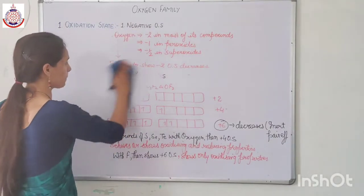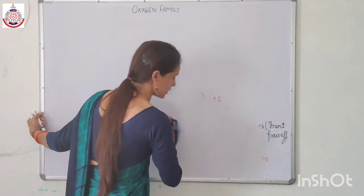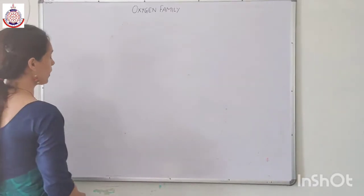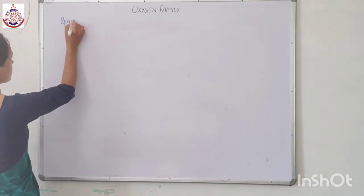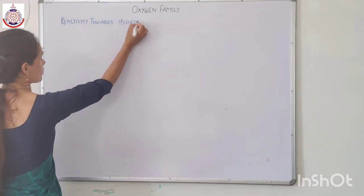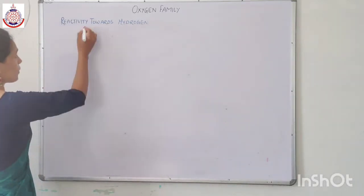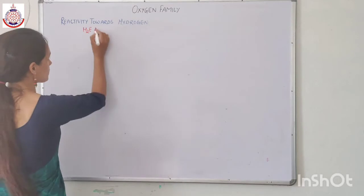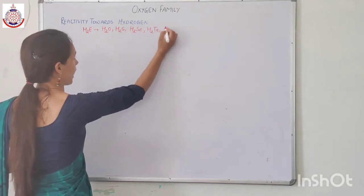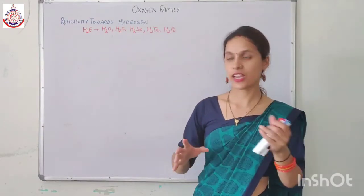Now we will take another chemical property: the reactivity towards hydrogen. When the elements of the oxygen family react with hydrogen, they form hydrides. The elements of the oxygen family react with hydrogen to form hydrides of general formula H2E — that is H2O, H2S, H2Se, H2Te, and H2Po.